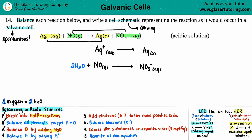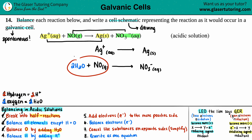Step four: balance hydrogens by adding H⁺ — don't forget the plus sign. The top reaction has no hydrogens on either side, so it's balanced. The bottom reaction now has four hydrogens from 2H₂O on the left and none on the right, so we add 4H⁺ to the right side.